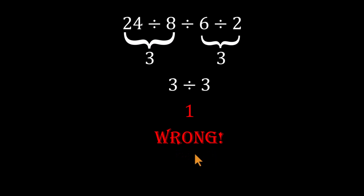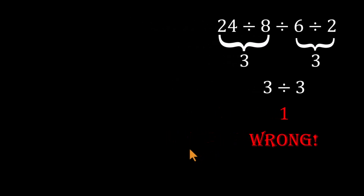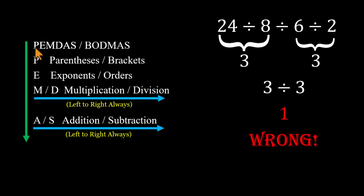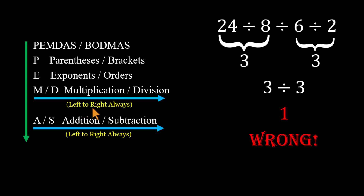Let's see why. Remember PEMDAS — the order of operations. In this problem, the only operation is division. So the rule is simple: when there are several divisions in a row, you go strictly left to right.